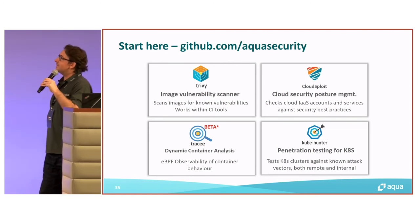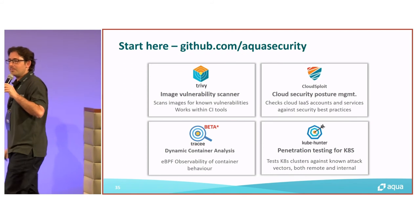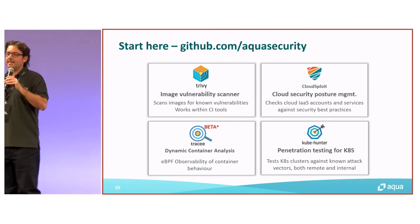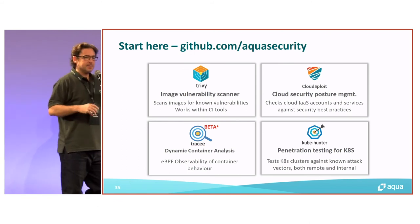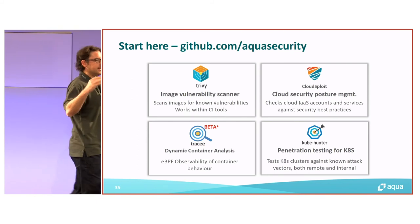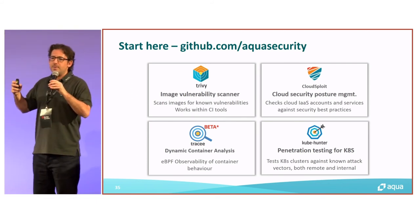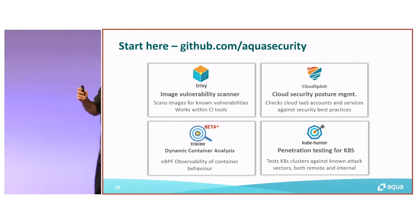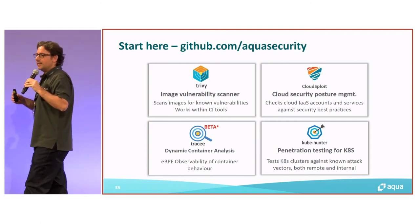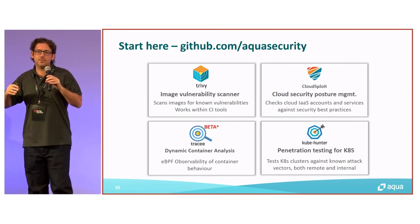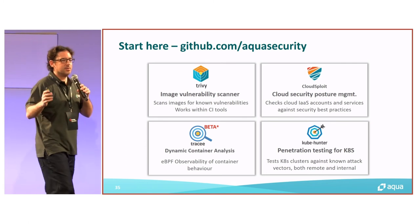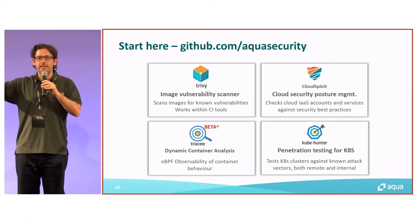So to wrap up: we spoke about Trivy, which allows you to scan images both locally on developers' workstations and to embed that in the CI pipeline to control the promotion of images into your registry. It checks for vulnerabilities in the underlying operating system or dependencies, gives you information on how to remediate, and prevents those images from going into the registry. The next tool we spoke about was Tracee, Trivy's sister — an eBPF tool that leverages that technology to do deep behavioral analysis of containers. It allows you to identify malicious behavior that would not be identified by static scanning alone, like that piece of malware that was GZIP compressed, Base64 encoded, and embedded in the image.